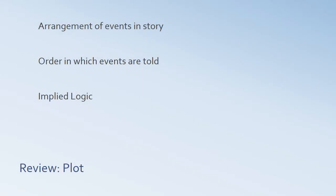To review, plot is the arrangement of the events in a story. It's what happens in a story, but it's the order in which the events are told, not necessarily the order in which the events happen. Sometimes they can be told in a different order than in which they happened. And there's an implied cause and effect or a meaning suggested by the plot, so by understanding how and why the events happen, we can understand the story better.